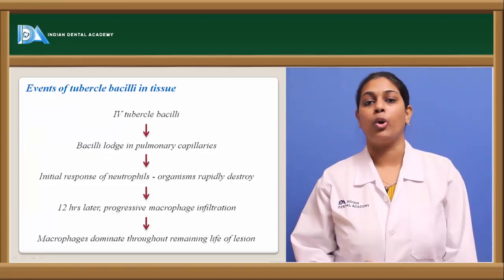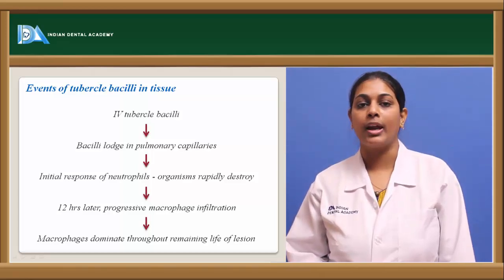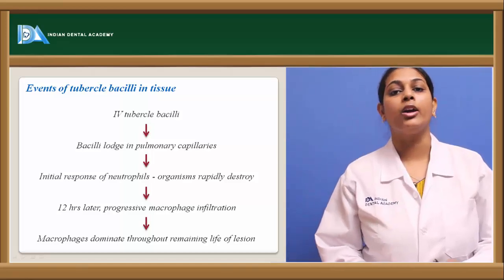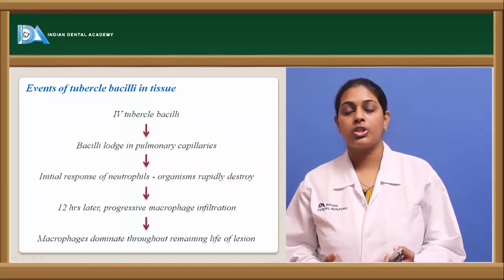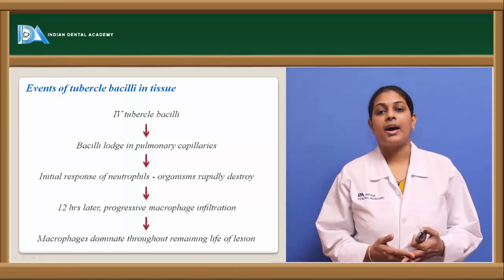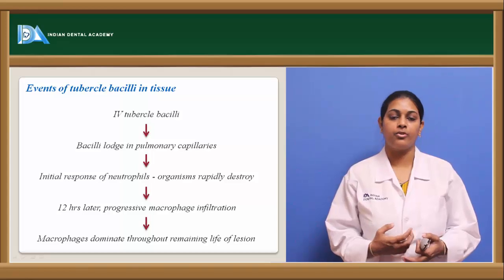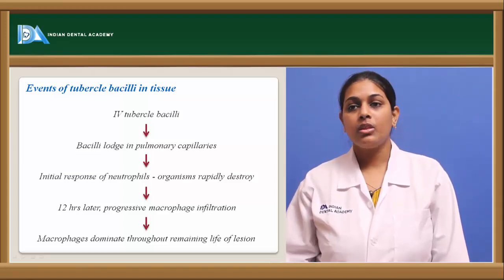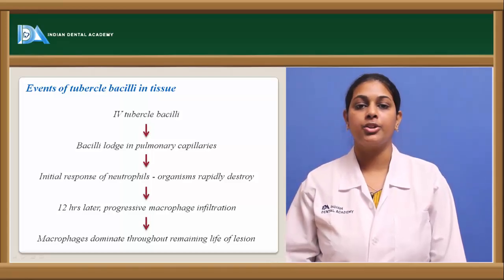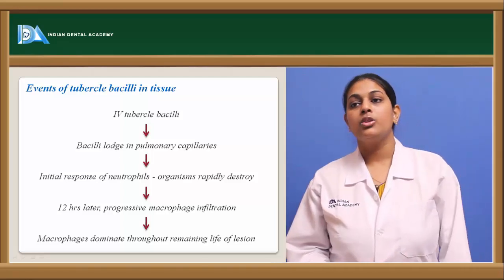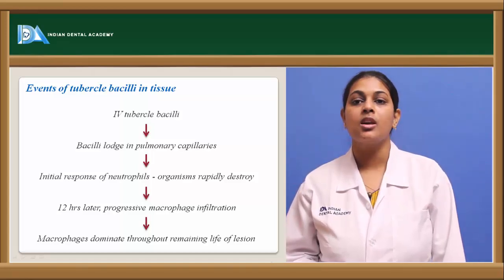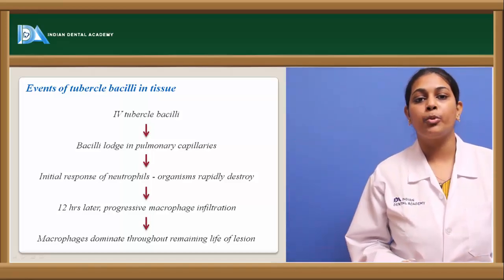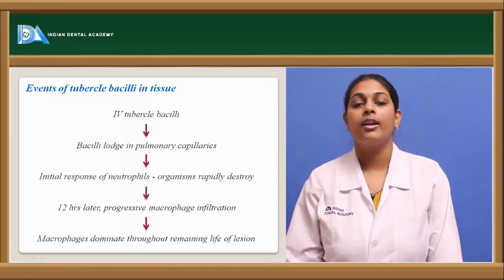Coming to what happens when bacilli enter the human body: the most prone area for the bacilli is the lungs, since Mycobacterium tuberculosis are aerobic species requiring high oxygen tension for growth. Experimentally, when tubercle bacilli were intravenously injected into a guinea pig, the bacilli immediately lodged within the pulmonary capillaries. The initial response had neutrophils taking action, and organisms were rapidly destroyed because of proper neutrophil function.